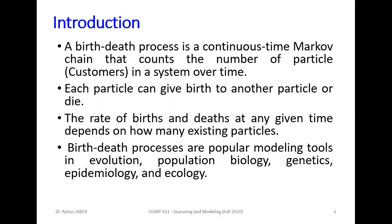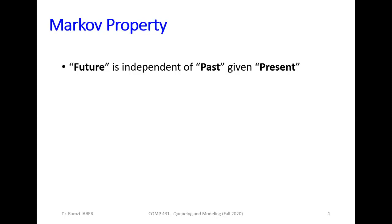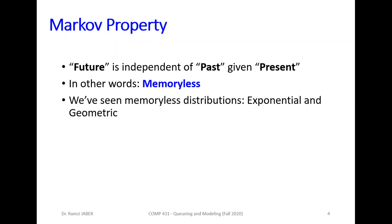Birth-death processes are popular modeling tools in evolution, population biology, genetics, and others in biological processes. Review Markov properties: the future is independent of past given present. So the future and the past are independent but the future depends on present, so this is called memory-less. We have seen memory-less distributions before like exponential distribution and geometric distribution. These memory-less distributions are useful for modeling and analyzing real state systems.